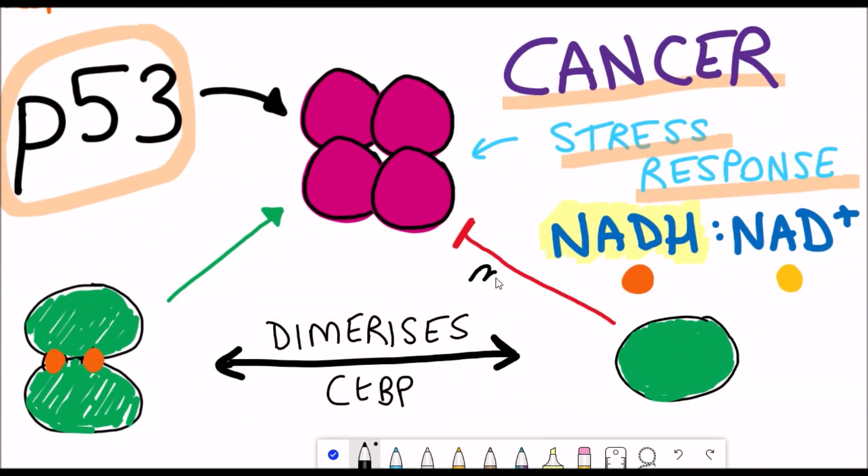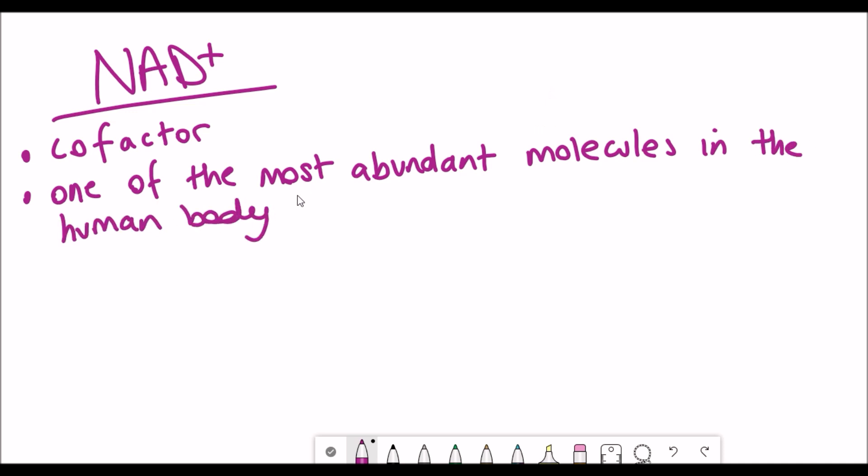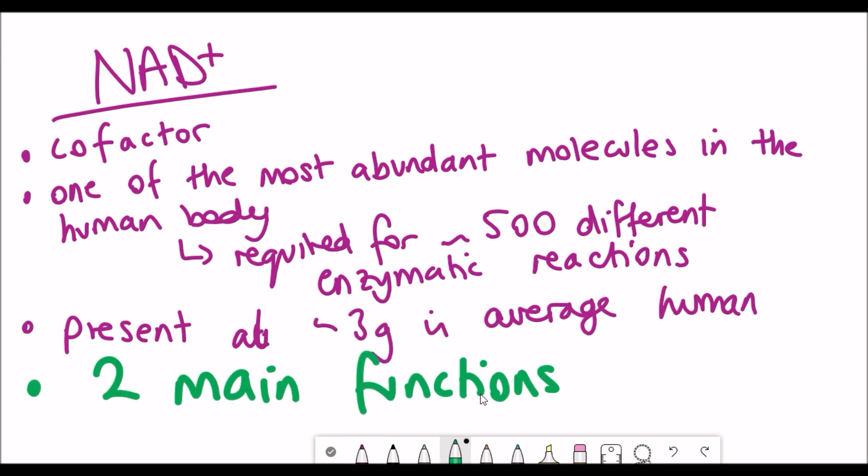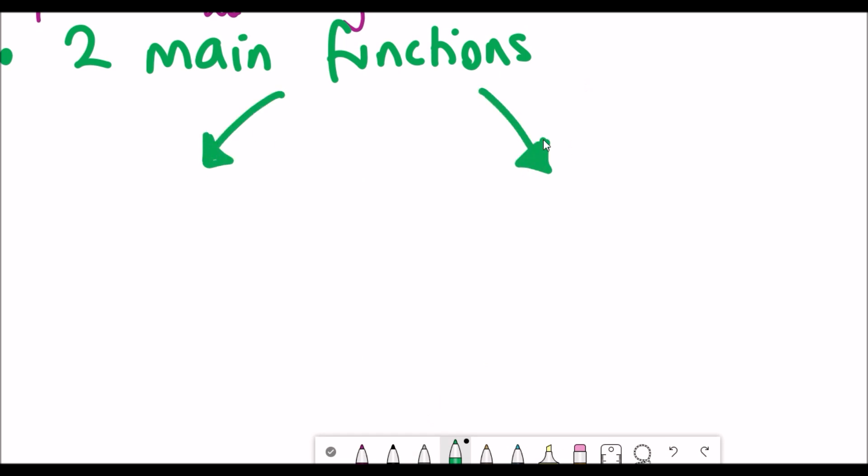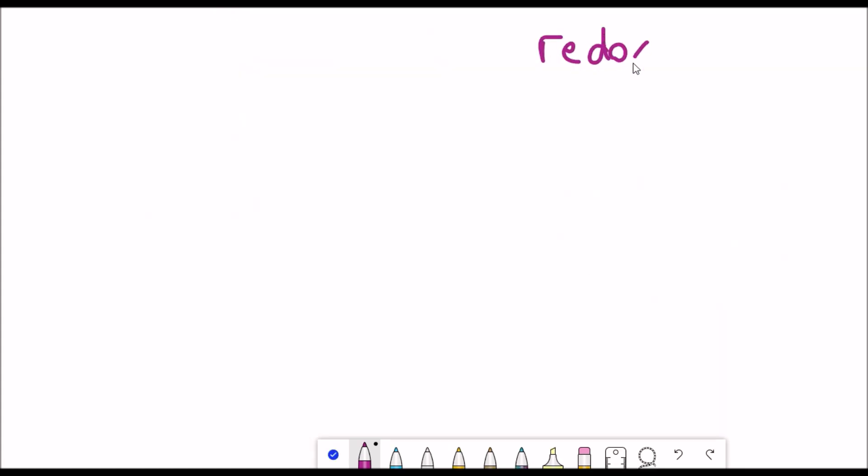Before I go any further into explaining the results from that paper, we just briefly need to recap what NAD+ actually is. I feel like I've spoken about NAD+ quite a few times now but it's such an important cofactor for the body and it's involved in so many different interactions. Its main functions can be split down into two different areas: one of which is its role as a redox coenzyme and the other is as a substrate for NAD+ consuming enzymes. In this video we'll focus on its association as a redox coenzyme and so this simply refers to its involvement in metabolic processes.